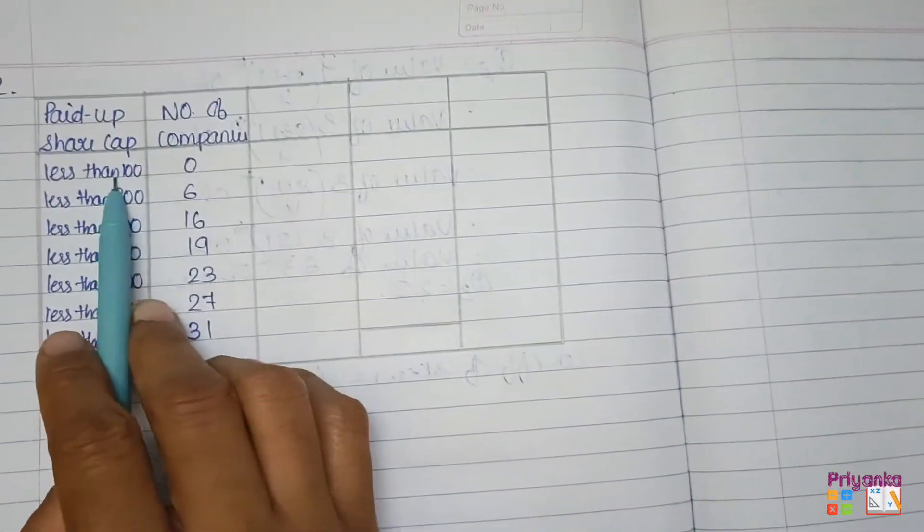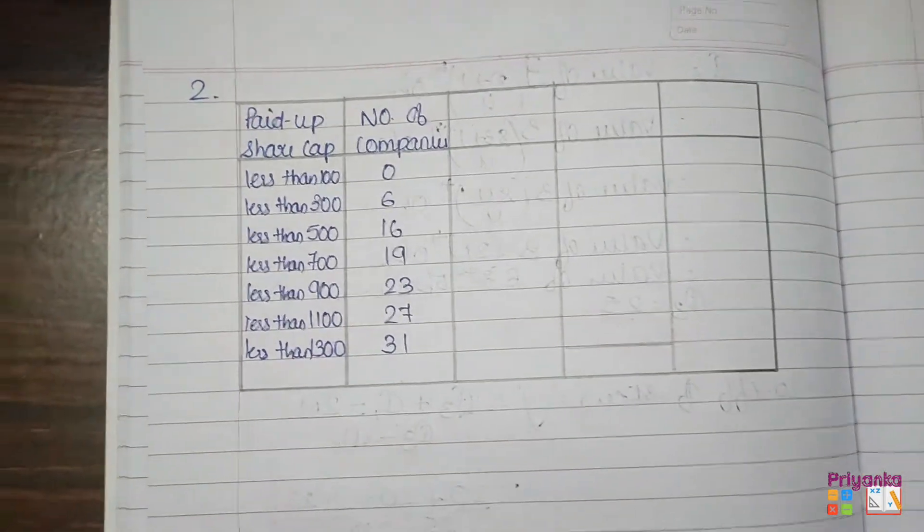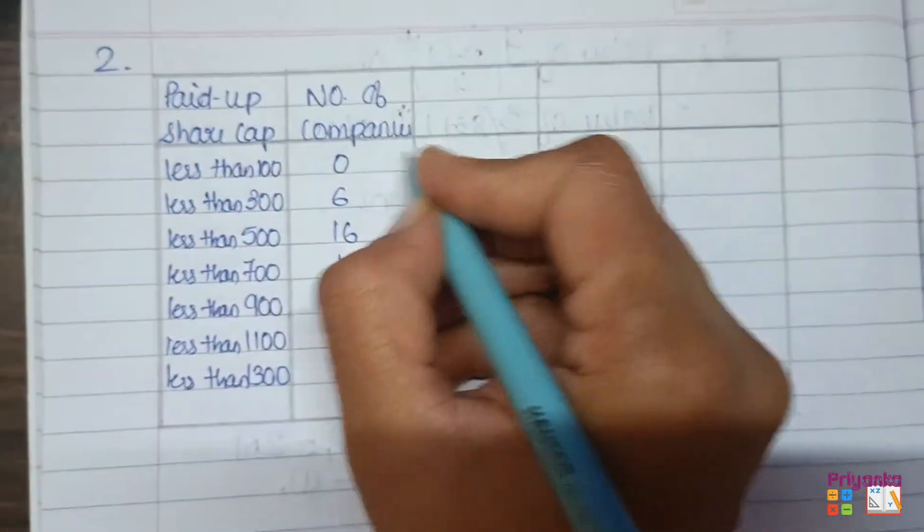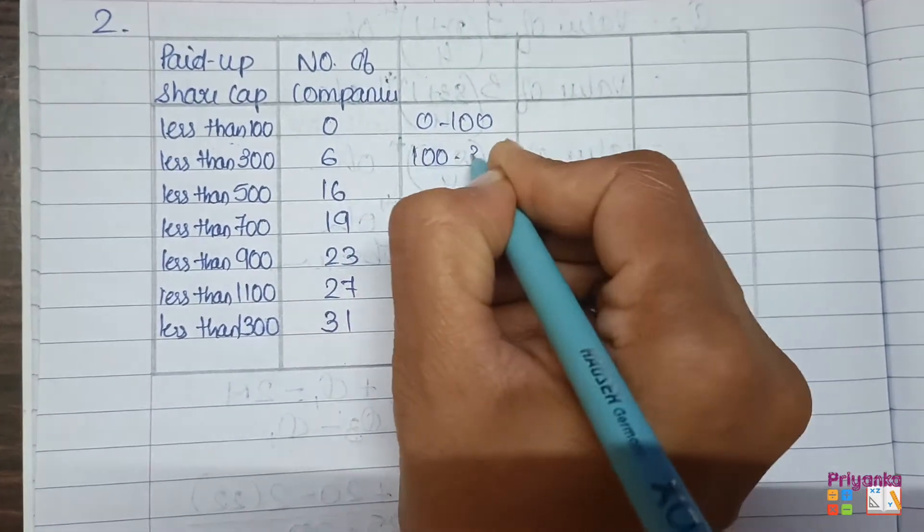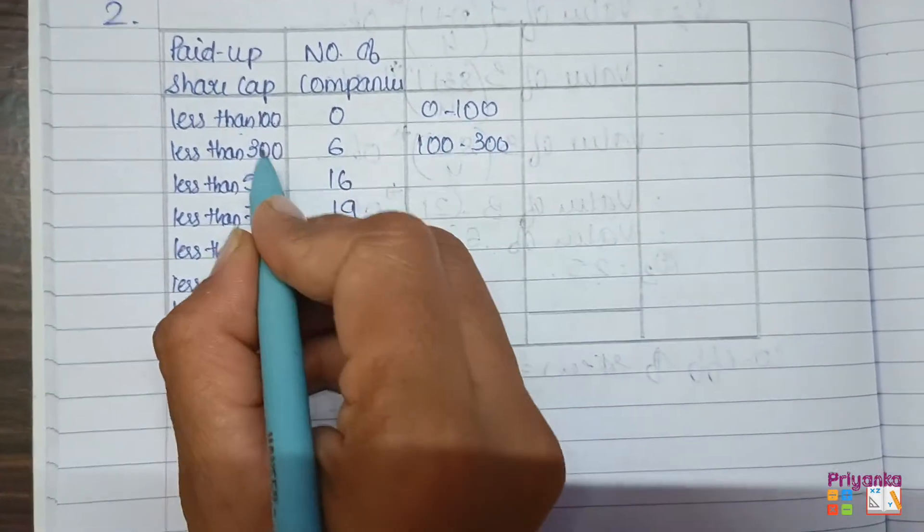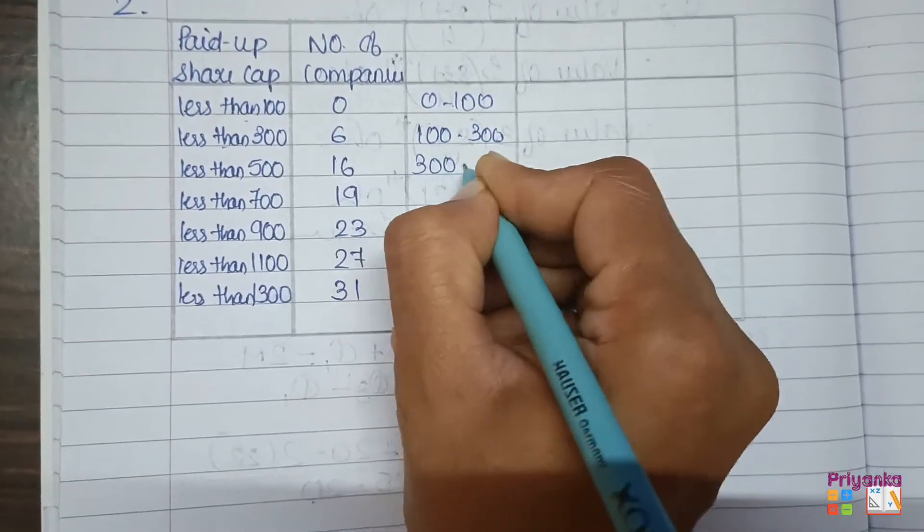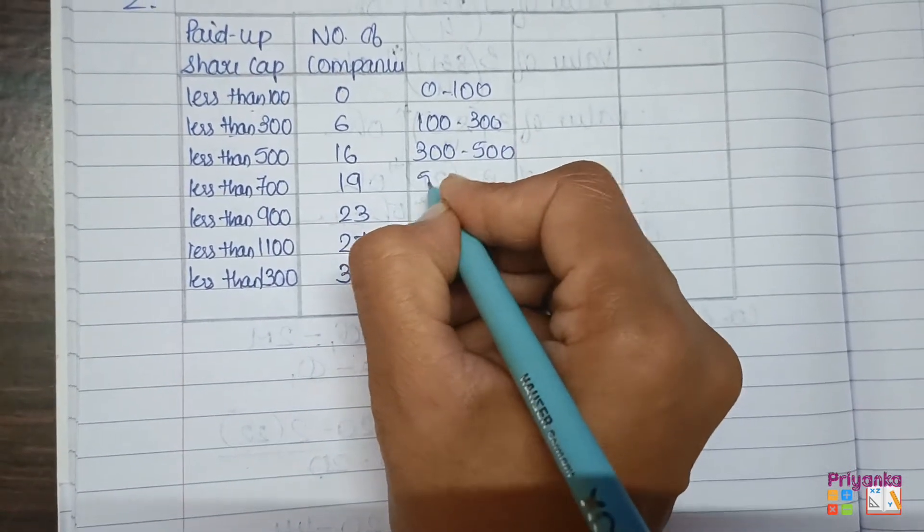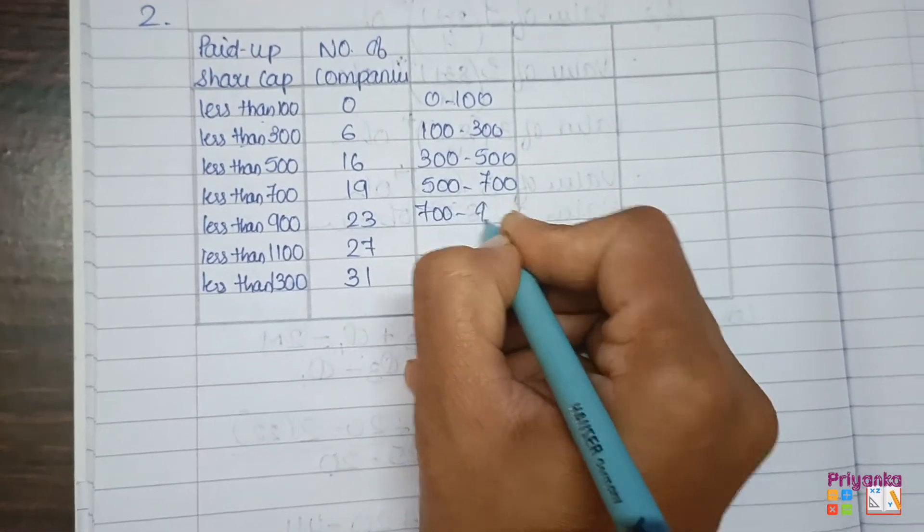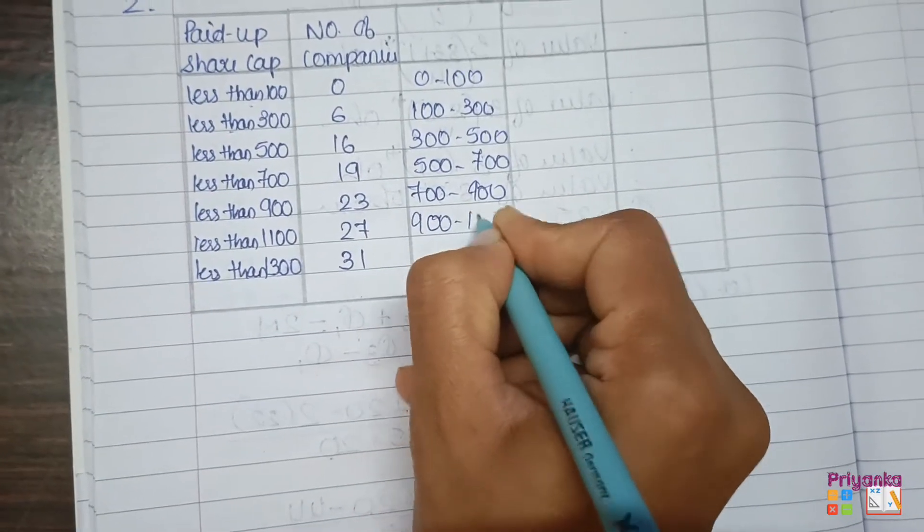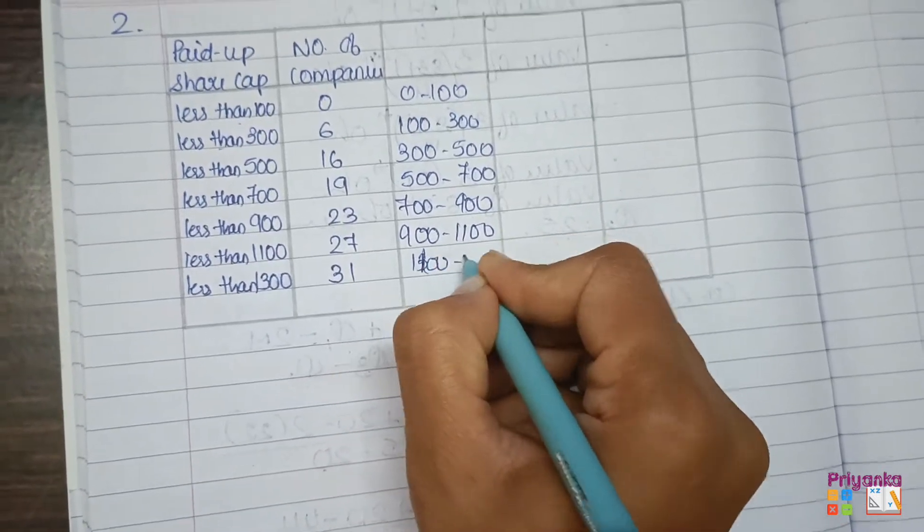So here we have the ready cumulative frequency, but obviously we have to make class proper. If we have to make class less than 100, which means we have to first make the proper class, which would be 0 to 100, next 100 to 300, less than 100, right? Here we have less than 300, so 100 to 300, next 300 to 500, less than 500, 500 and less than 700, so 500 to 700, 700 to 900, 900 to 1100, 1100 to 3000.